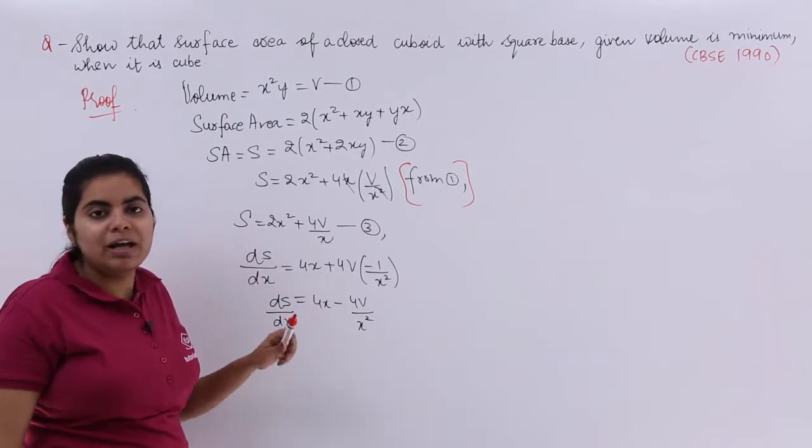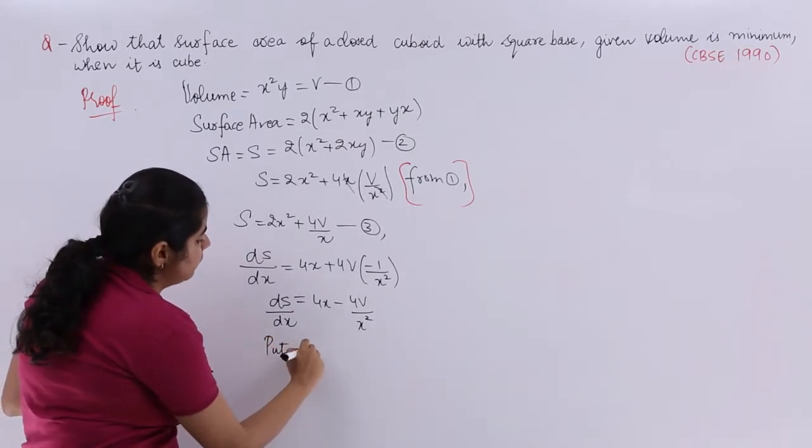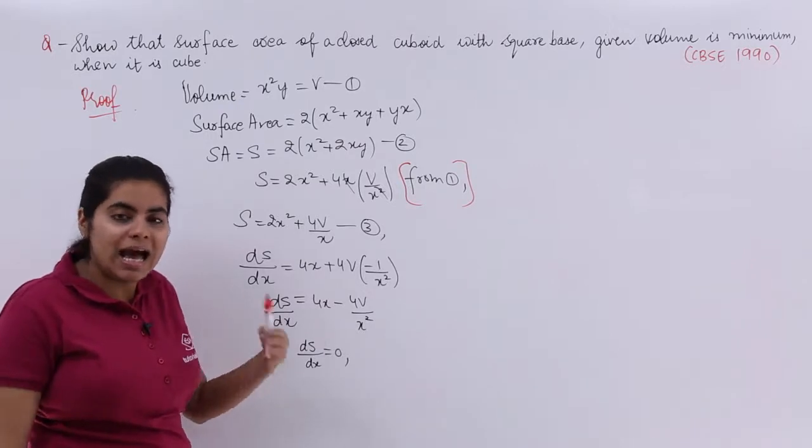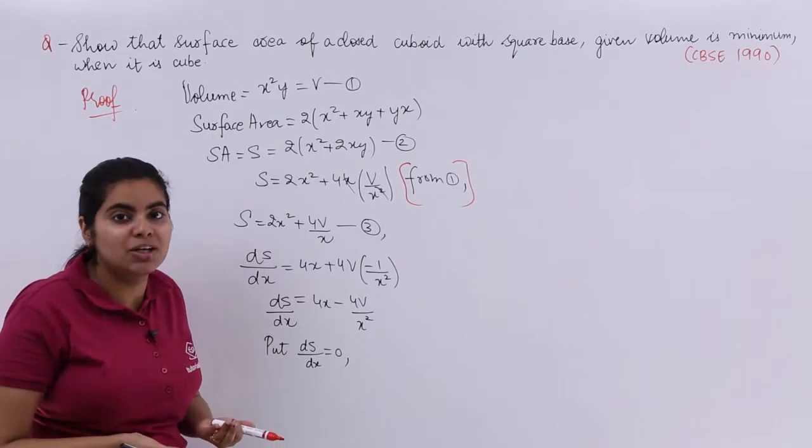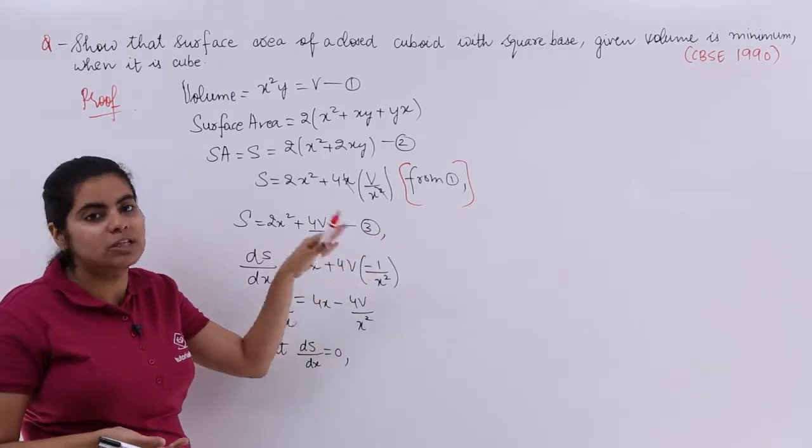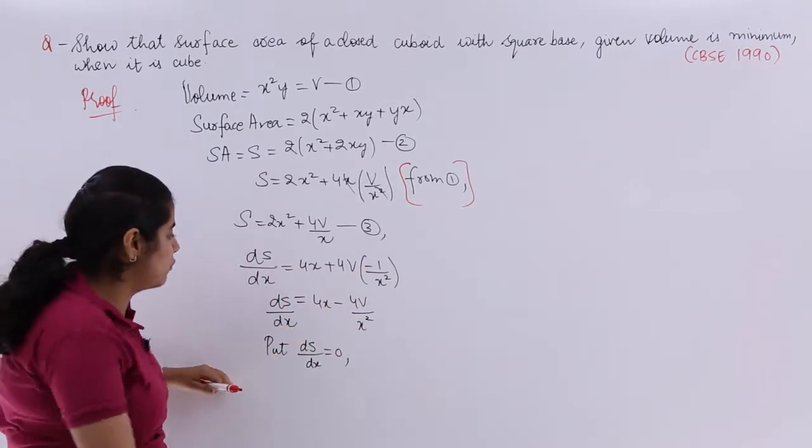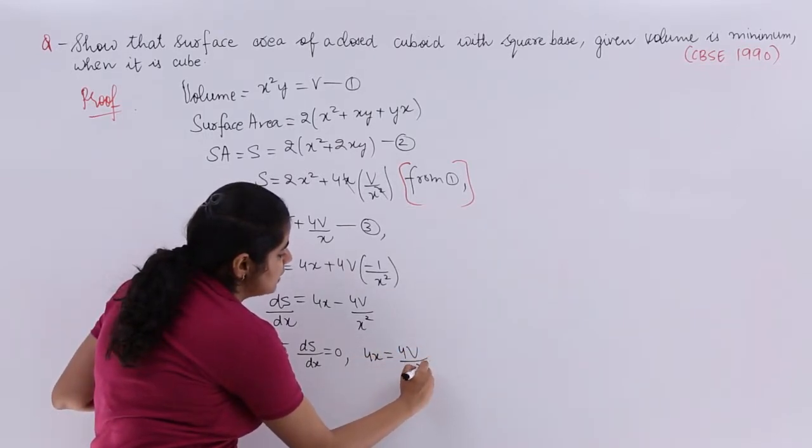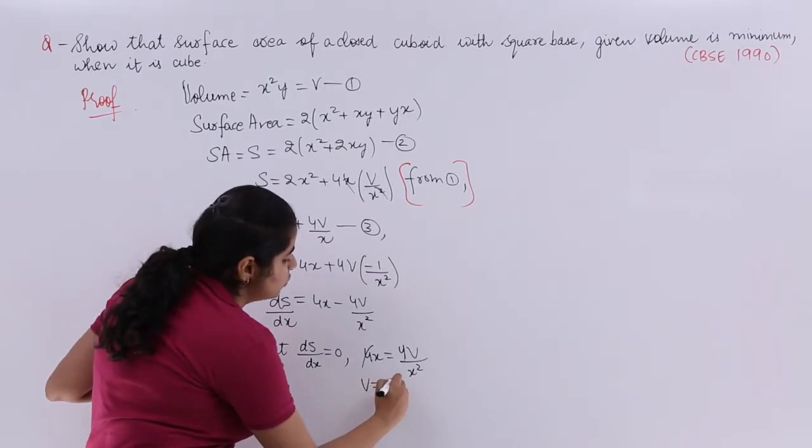But in order to prove something we have to put the first derivative equal to 0. So put DS by DX is equal to 0. Now you see as soon as we are going towards more number of questions, the questions are becoming more clear to you and these questions are definitely going to come in 4 or 6 mark. One of these questions would be coming in 6 marks, question of this kind. So please keep practice of it. So it is 4X is equal to 4V upon X square. 4, 4 getting cancelled. I get volume is equal to X cube.